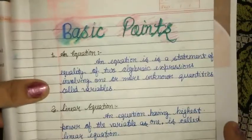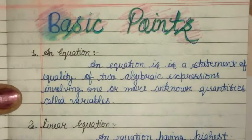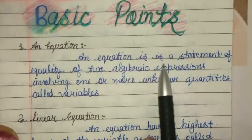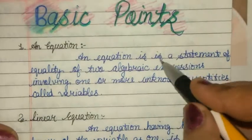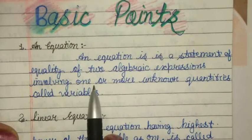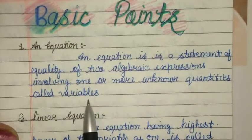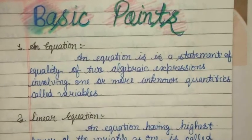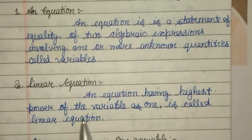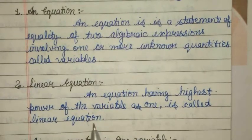The first basic point is an equation. An equation is a statement of equality of two algebraic expressions involving one or more unknown quantities called variables. The second point is a Linear Equation: an equation having the highest power of the variable as one is called a Linear Equation.